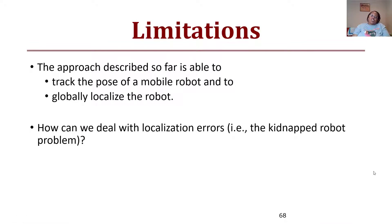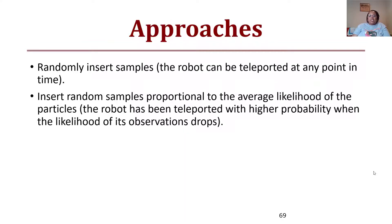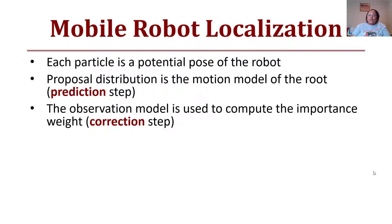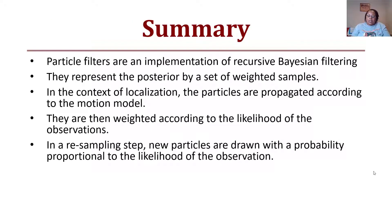There are some limitations to this approach. As described, MCL is able to track the mobile robot, globally localize it, and deal with localization errors. By randomly inserting samples, the robot can be teleported at any point and then reinject noise to relocalize by going through the steps again. This is proportional to the average likelihood of the particles — the robot can be teleported with higher probability when the likelihood of its observations drops. Each particle is a potential pose; the proposal distribution is the motion model (prediction step); and the observation model computes the importance weight (correction step).